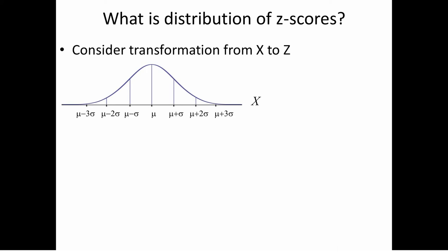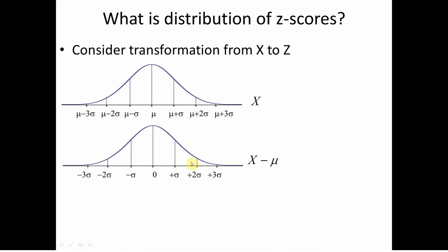I consider a coordinate transformation from the data value to the z-score. Here's my data value with the mean at center, stepping out in units of standard deviation. When I subtract off the mean, mu becomes zero, and the values now have units of standard deviation — telling you how far you are from zero in terms of standard deviations. Notice the distribution has not changed; all I've done is shift it.